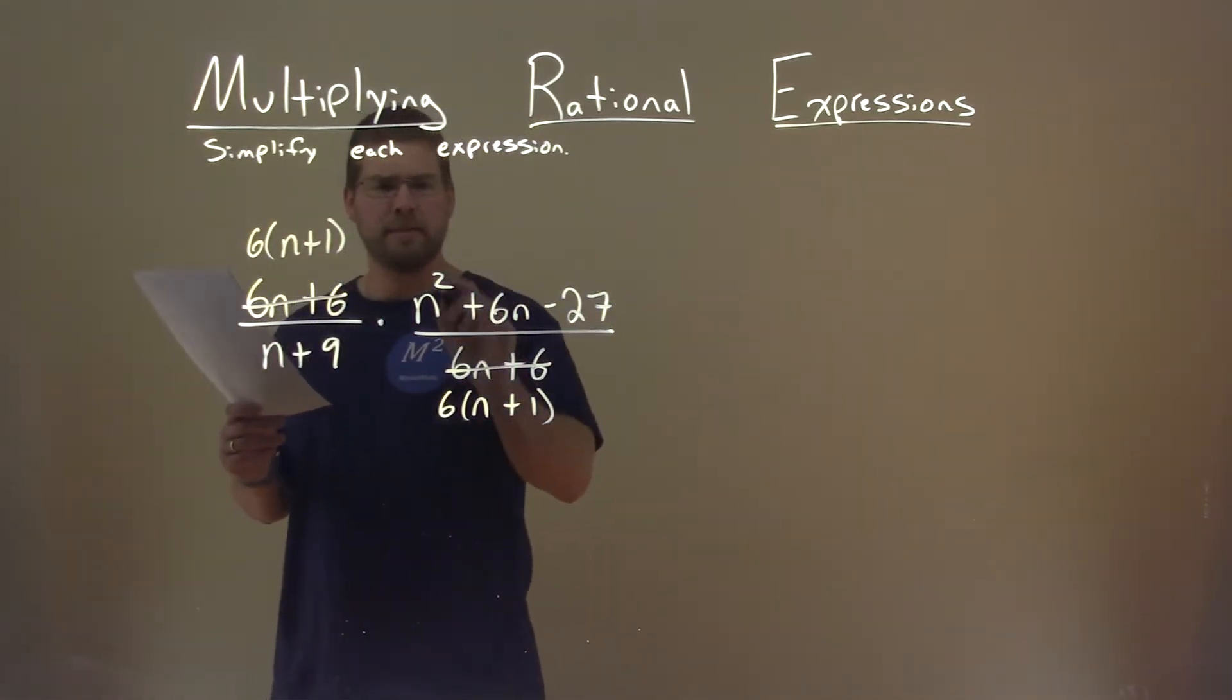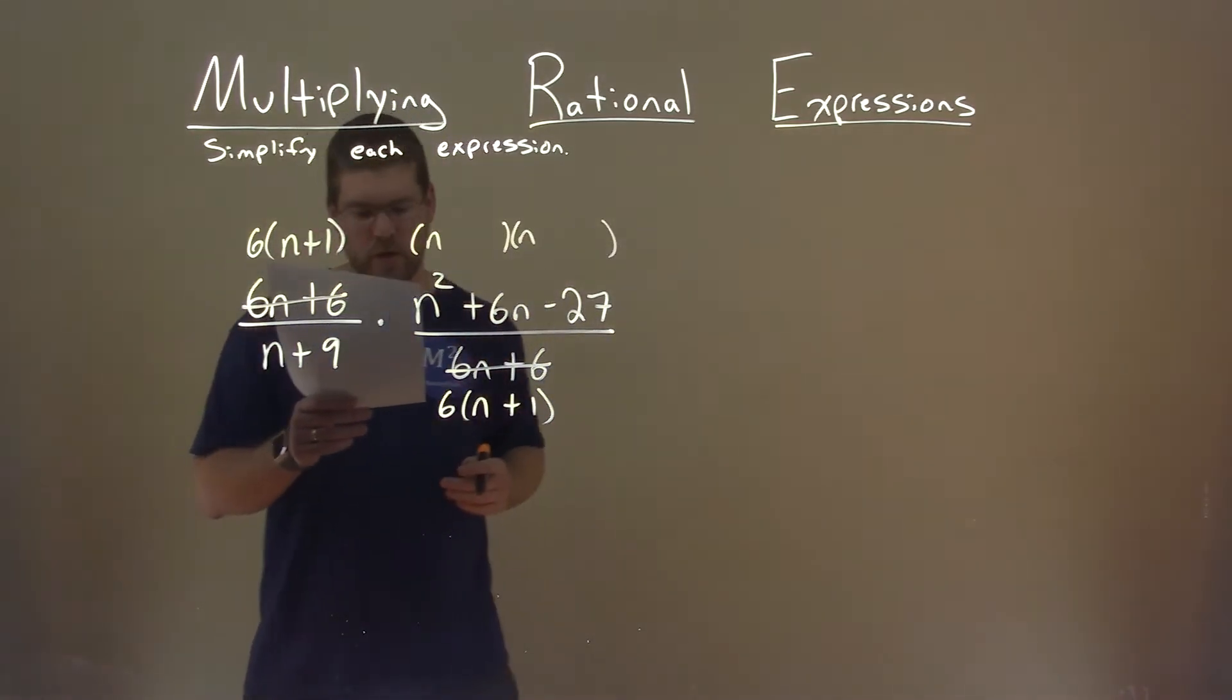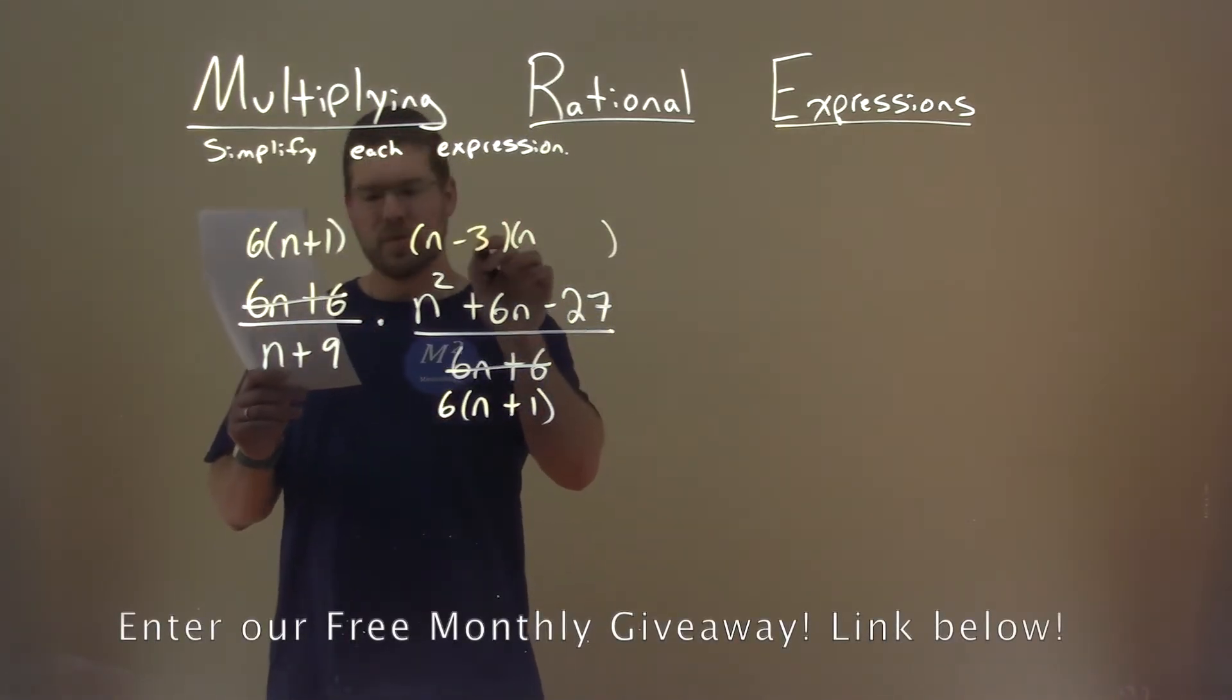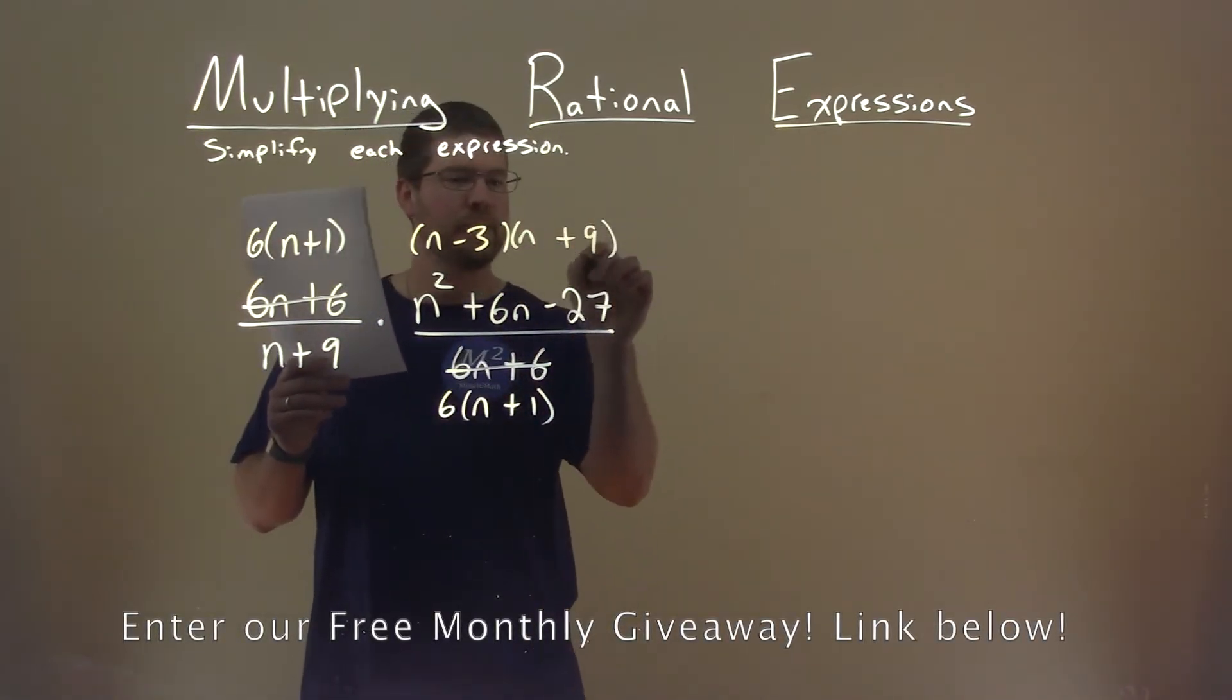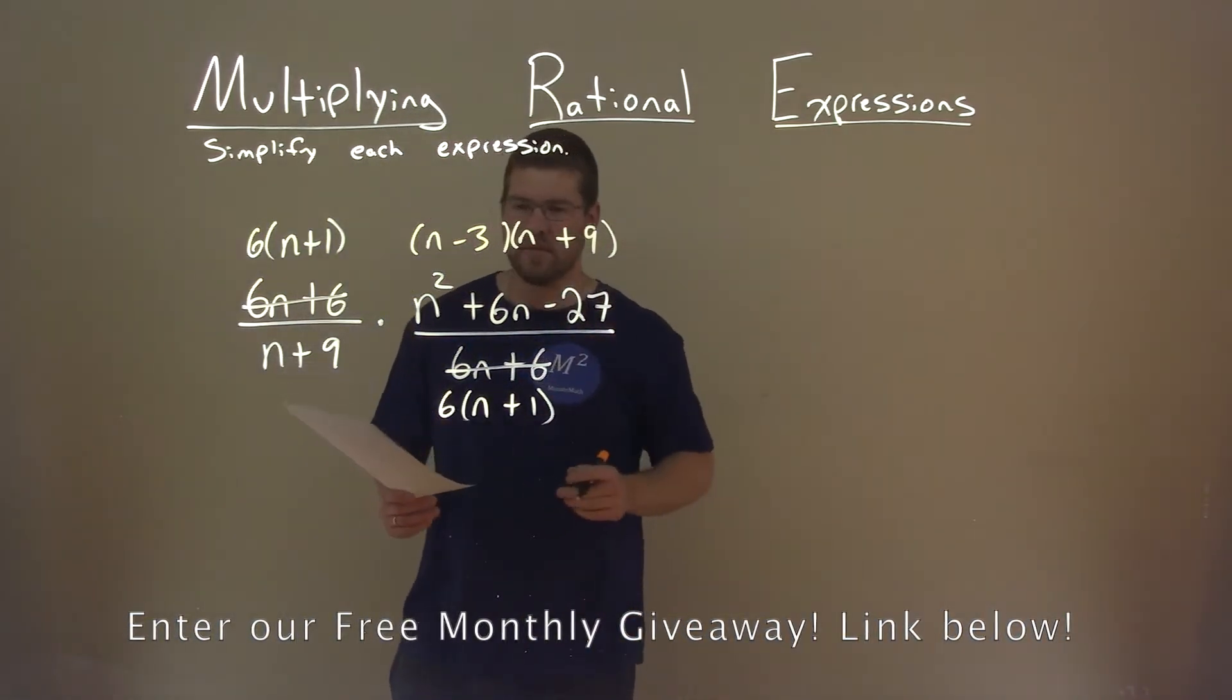Alright, this upper part here, that looks like it can factor pretty easily. We need two numbers that multiply to be negative 27, but add to be positive 6. Minus 3 and a positive 9. Negative 3 times 9 is negative 27. We add the two, we get a positive 6.